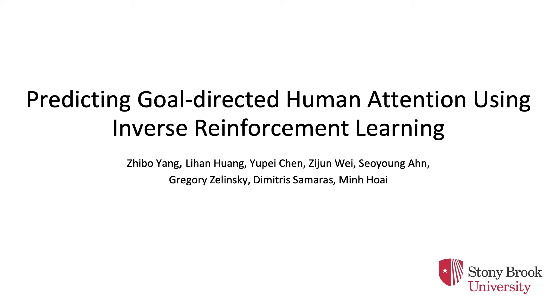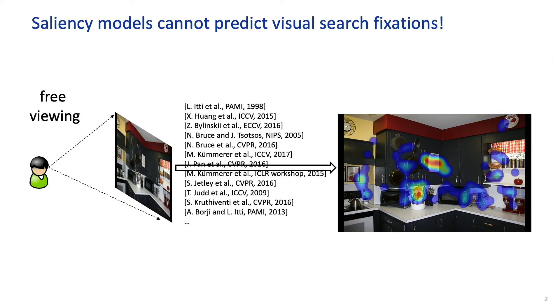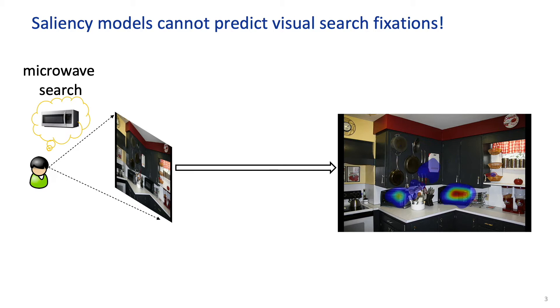Hi everyone, this is Zhibo Yang. Today I'm going to present our work on how to use inverse reinforcement learning to predict goal-directed human attention. Most computer vision researchers are familiar with saliency models that are trained from human gaze data collected during viewing of images. However, people spend most of their time searching for things with their eyes. As shown in this microwave search example, this visual search behavior is quite different from viewing.